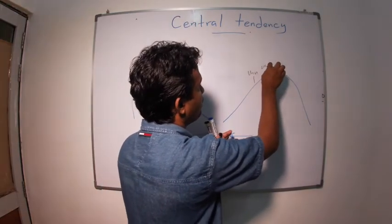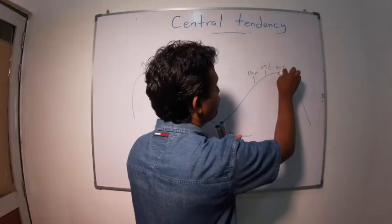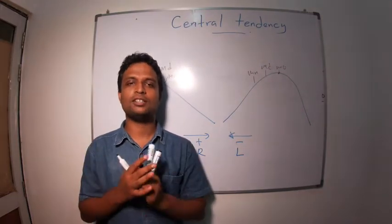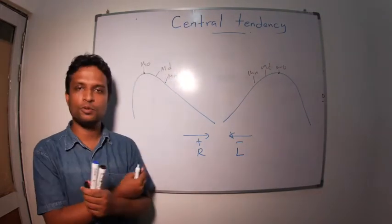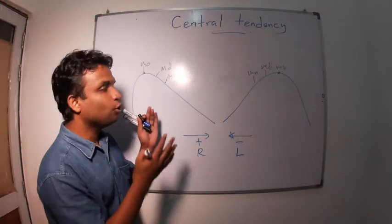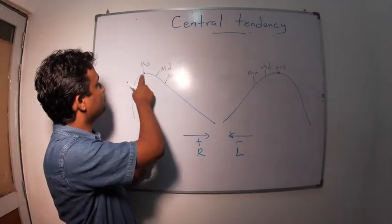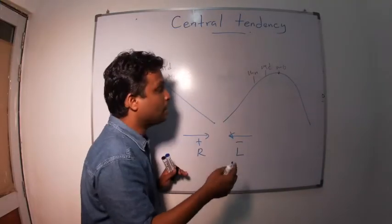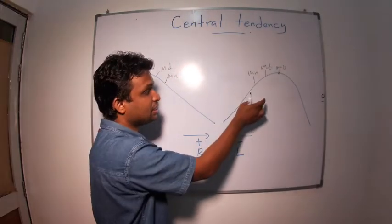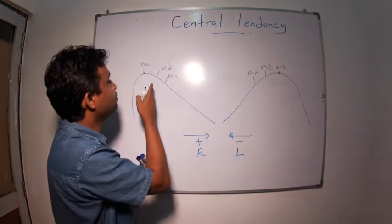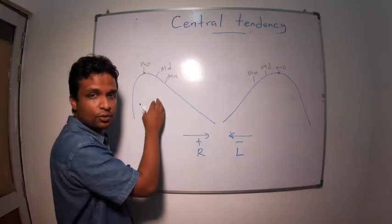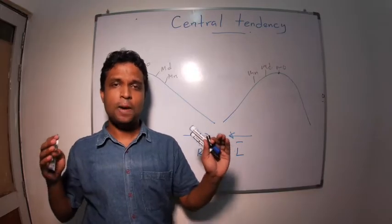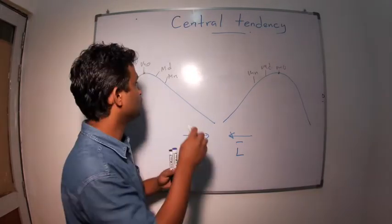Mode is there where we have highest frequency. Now what is the best measure of central tendency in a skewed distribution? Please think about it. Look at here. Mode is more towards left side here, and mode is more towards right side here. Mean is more towards left side in this distribution, and mean is towards right side in this distribution. But look at median. Despite the shape of the distribution, median is always at the center.